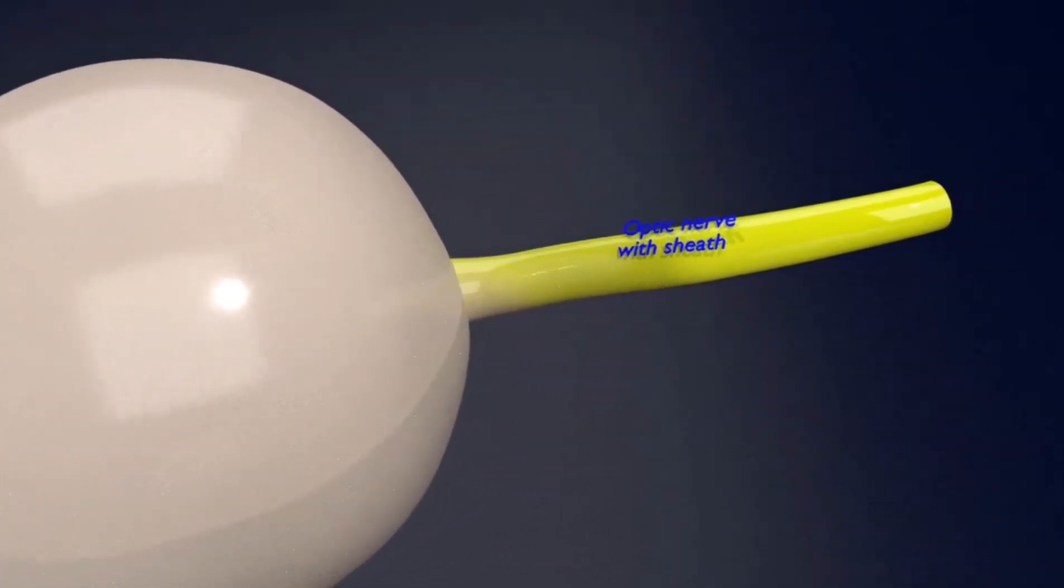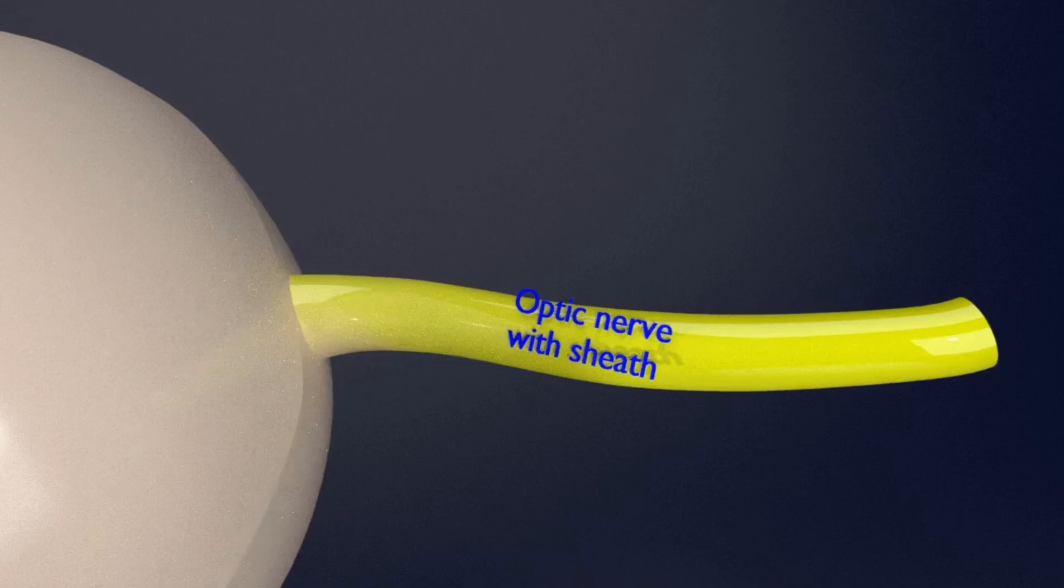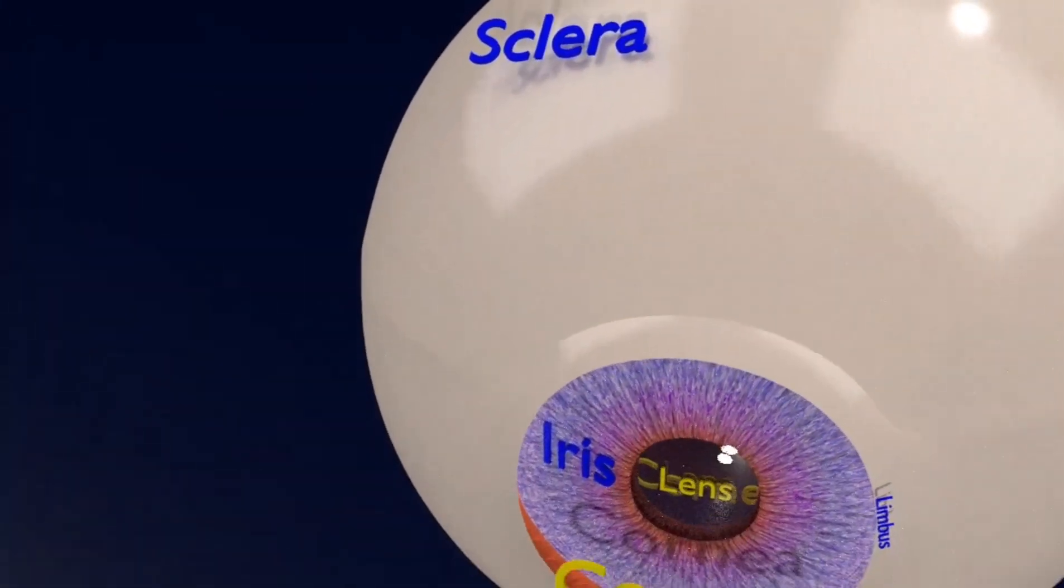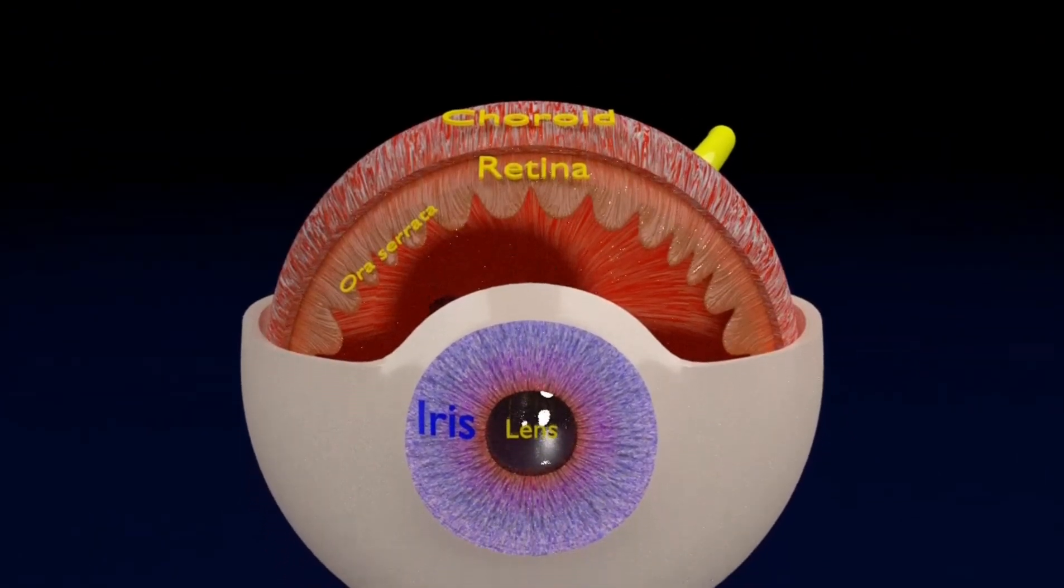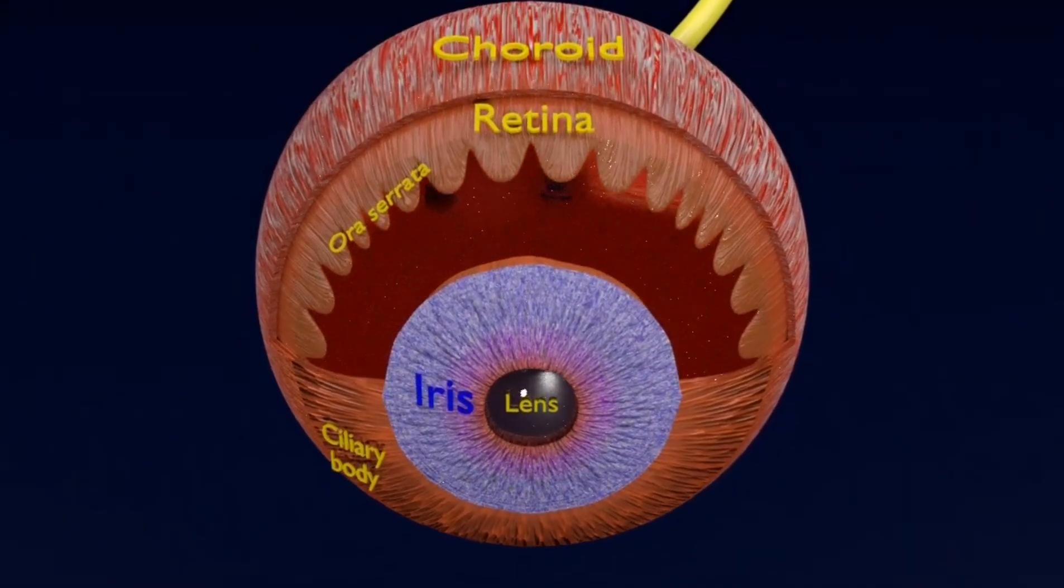Now, removal of the extraocular muscles fully exposes the optic nerve with its sheath. The optic nerve sheath refers to three meningeal membranes, which I'll tell you later. The upper part of the sclera on removal reveals the external choroid, its parts of ciliary body and iris.